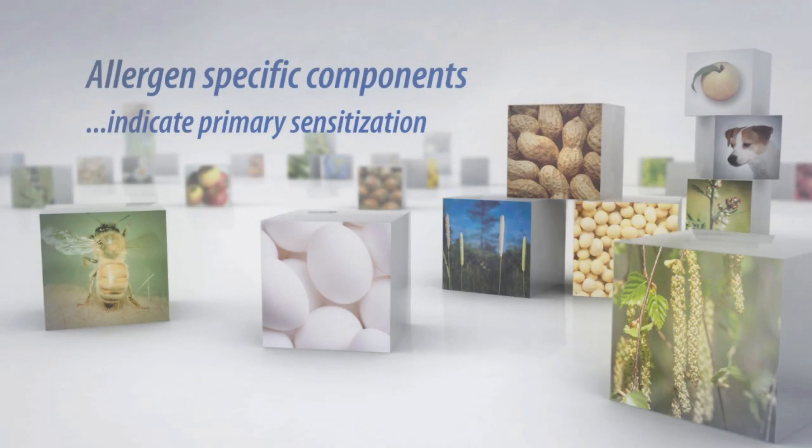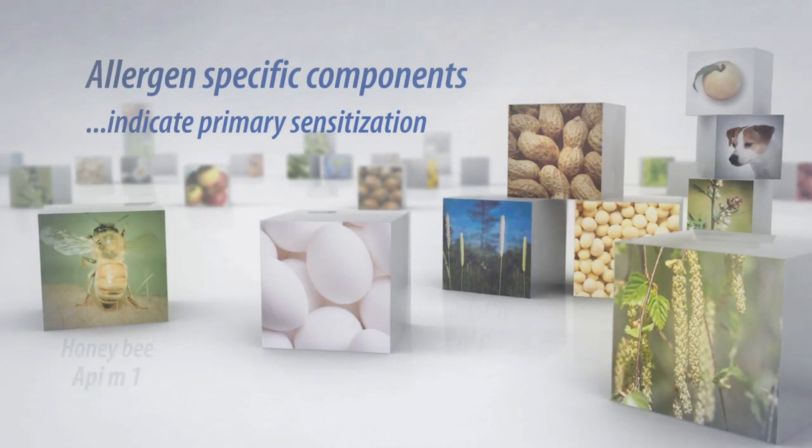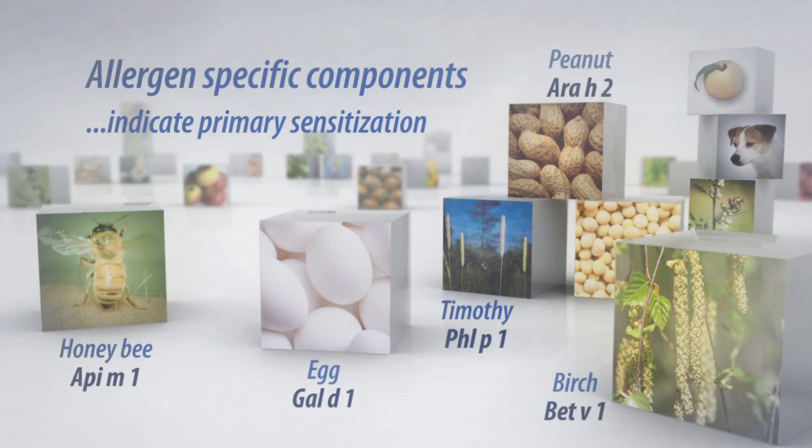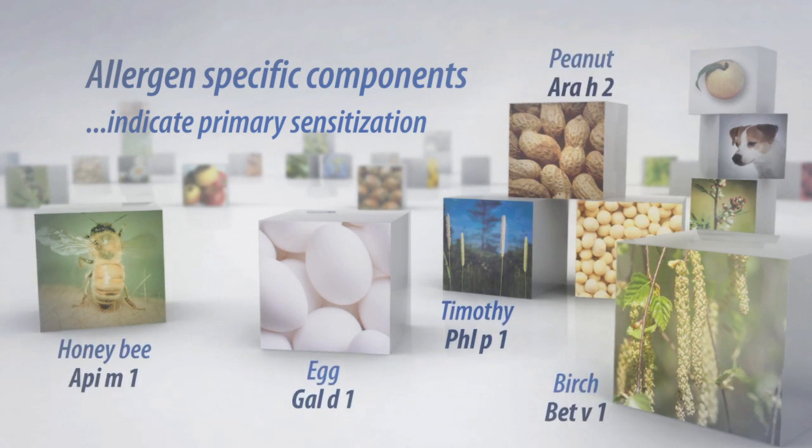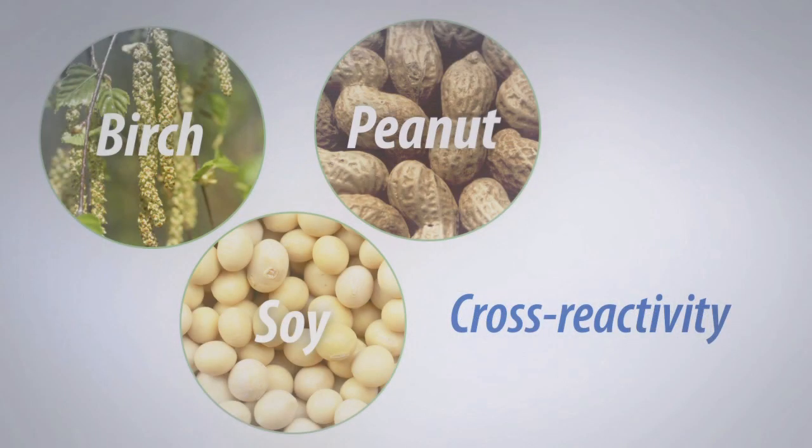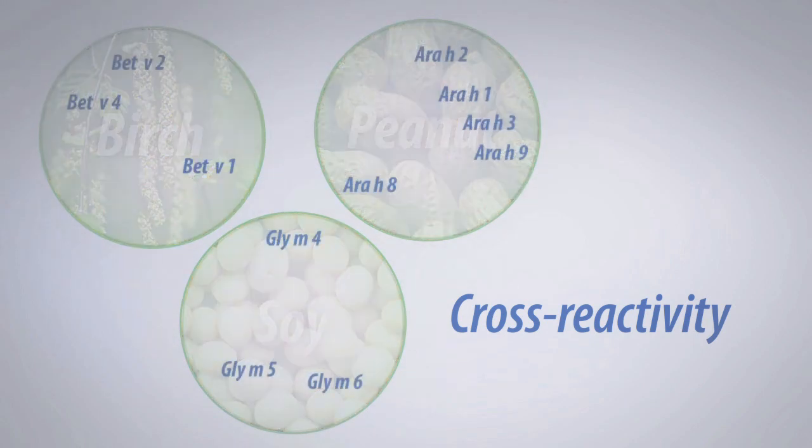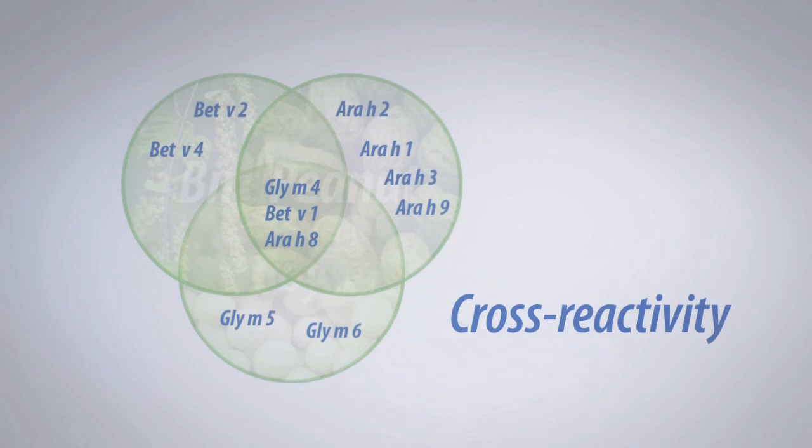Sensitization to allergen-specific components indicates primary sensitization and some examples of common specific components are on the screen. Sensitization to cross-reactive components is common and indicates sensitization to allergenic proteins that can come from multiple sources. It is exemplified by oral allergy syndrome, where sufferers sensitized to pollen develop oral allergic symptoms to certain fruits, nuts, and vegetables.